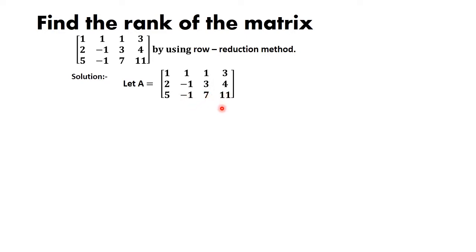For finding the rank, first check whether the given matrix is in row echelon form or not. Here the matrix is not in row echelon form because the second row's first element and the third row's first two elements are non-zero. So I am going to reduce the given matrix into row echelon form.